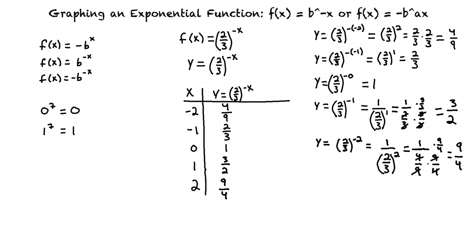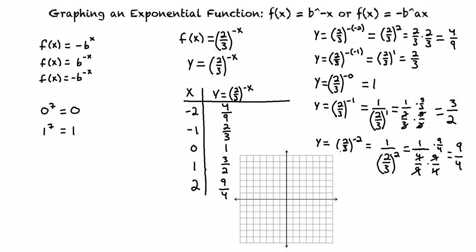Now that we have our x and y values, let's plot the points to complete our graph. We start by drawing our horizontal asymptote at y equals 0. Then we plot our points: x equals negative 2, y equals 4 ninths; x equals negative 1, y equals 2 thirds; x equals 0, y equals 1; x equals 1, y equals 3 halves; and x equals 2, y equals 9 fourths. Finally, we draw a curve through our points to complete our graph.